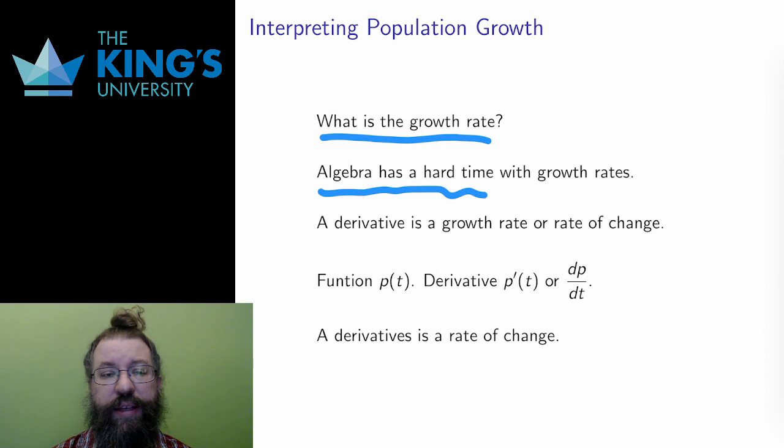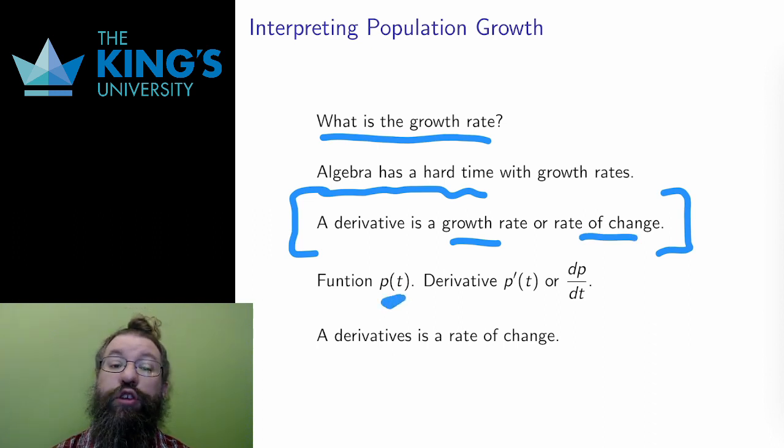The first big idea of calculus is to measure these growth rates. Here is a definition. The derivative of a function is its growth rate, or its rate of change. If the function is p(t), still thinking of population, there are two notations for the derivative. p' is the first, and it is called Newton's notation. The second, dp/dt, is called Leibniz notation.